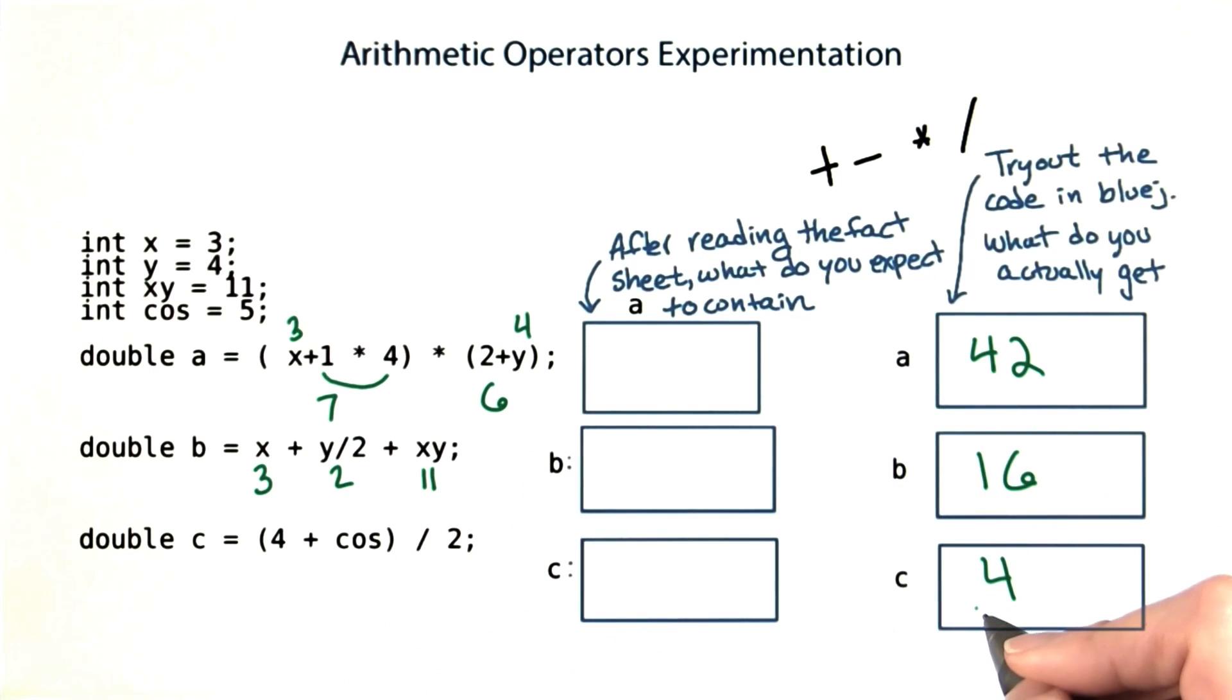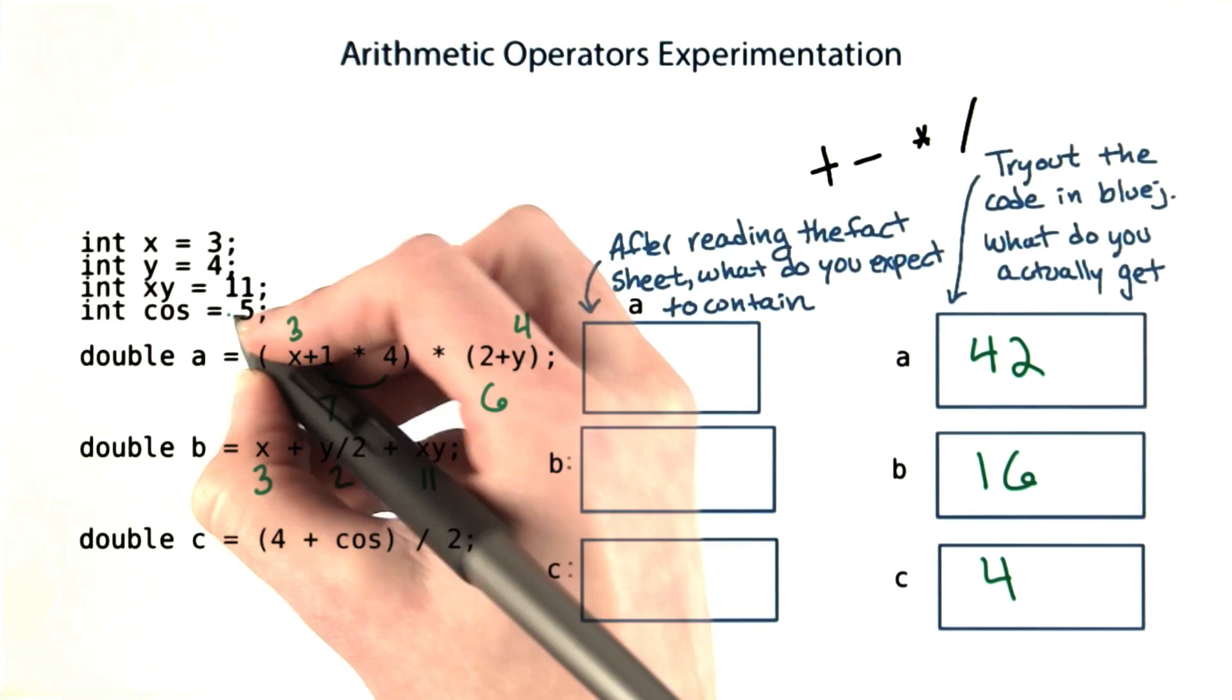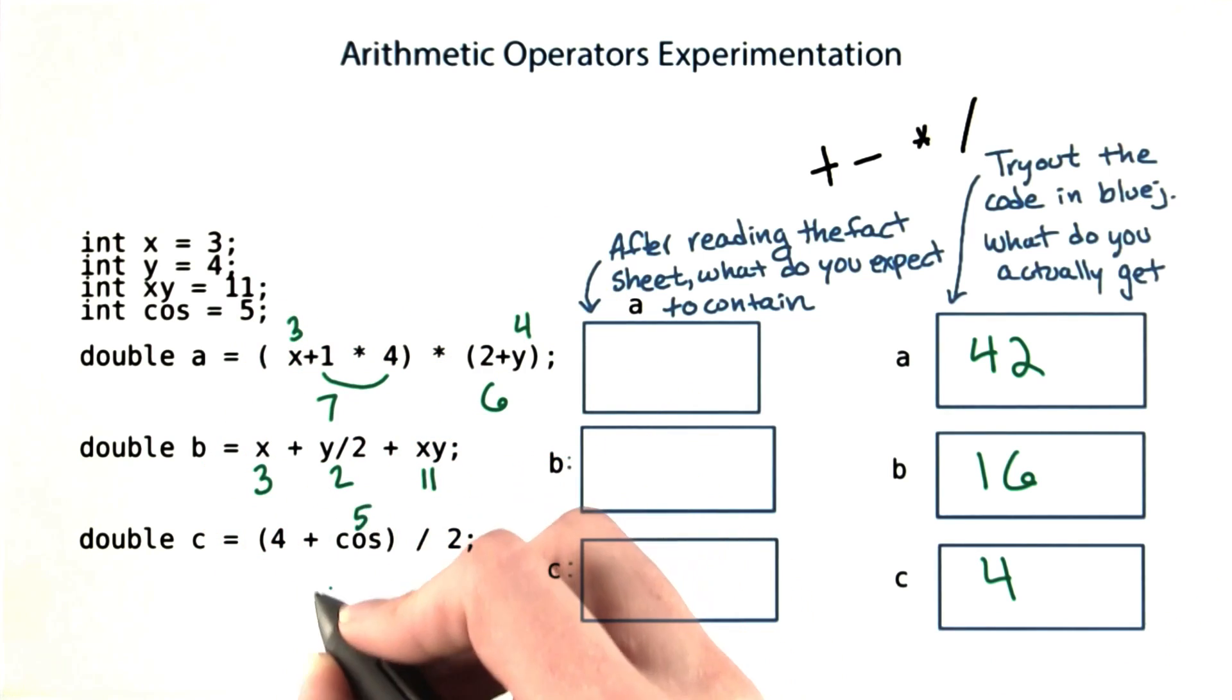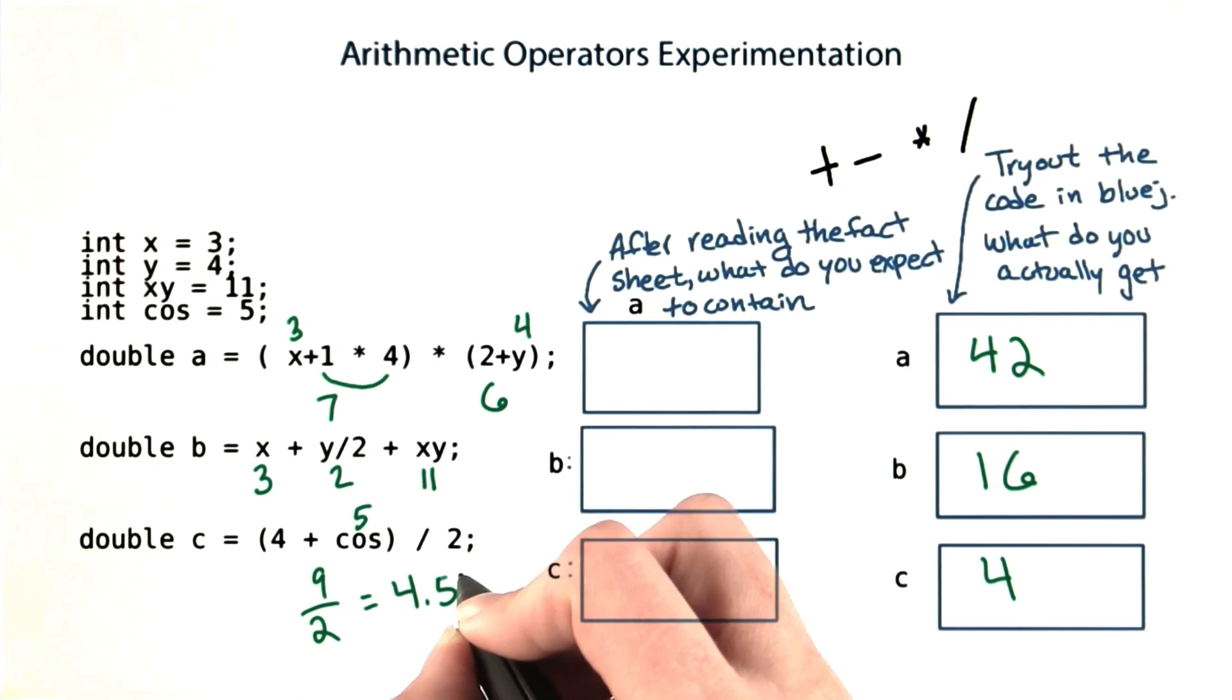For this last one, it kind of looks like Java just miscalculated. I would have expected this to be 4 plus 5, which is 9 over 2, which would be 4.5. Let's go back to Kai to talk about what happened.